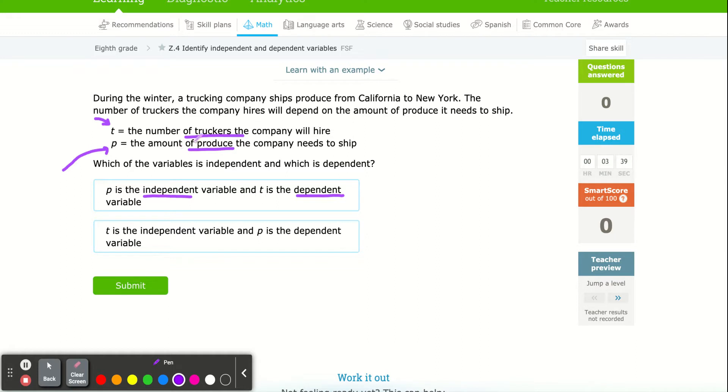So the same thing here is we're saying, all right, well, the amount of produce that ships is the independent variable. The trucking companies just get a whole bunch of produce they need to ship. They have no control over how much produce they get. But then we need to know how many truckers we need to send it. So P is the independent. Produce is the independent.